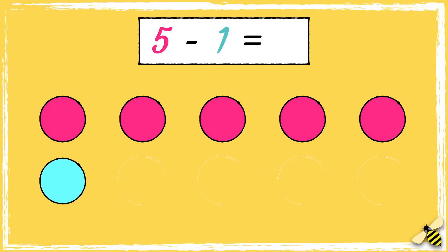Here is the difference between the two numbers. One, two, three, four. So the difference between five and one is four.